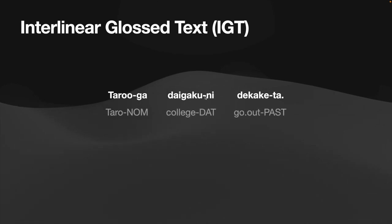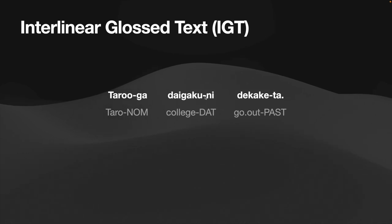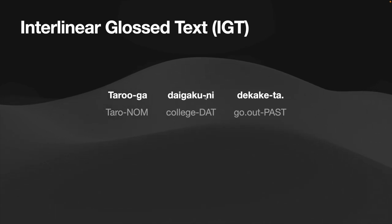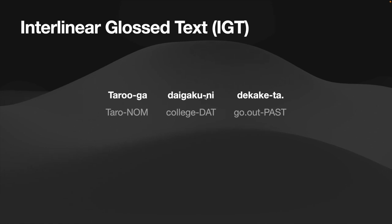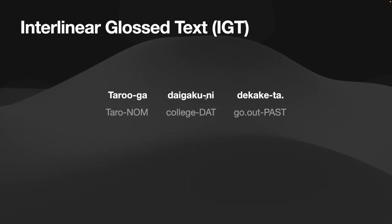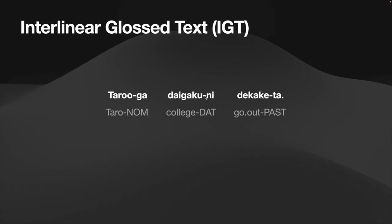The second line of IGT provides a gloss for each morpheme in the original sentence. For stems, the gloss is just the translation of the stem into English. For functional morphemes, the gloss indicates what the function of the morpheme is. For instance, in the first word, the morpheme GA indicates that the word is nominative case.